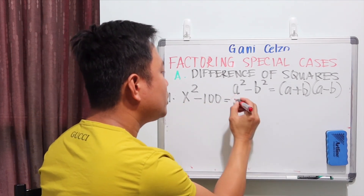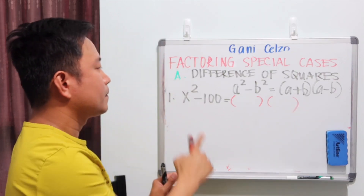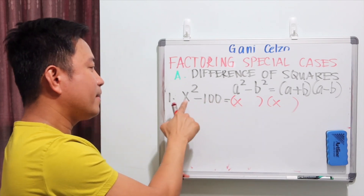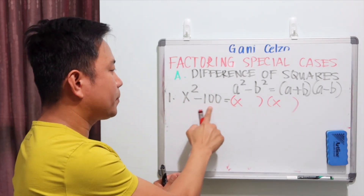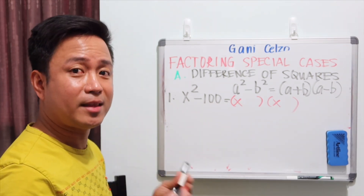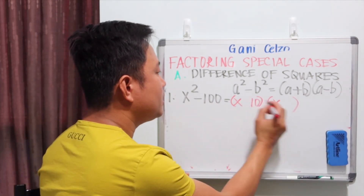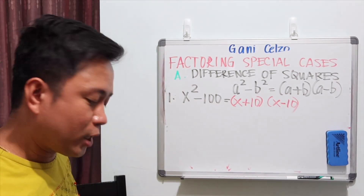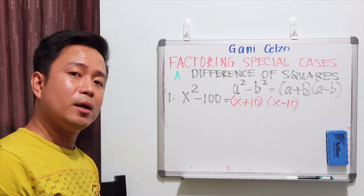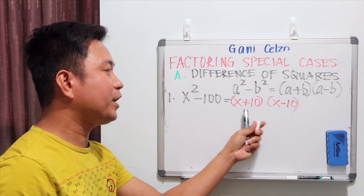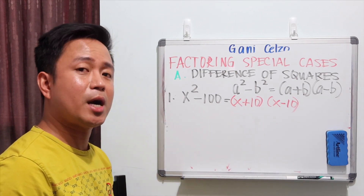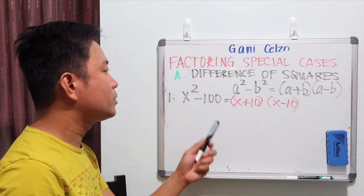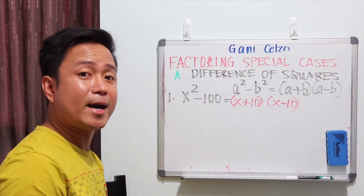When you factor x² - 100, you write x and x. x times x is x². And 100 is a perfect square: 10 times 10. So we write 10 twice — one with a plus and one with a minus: (x + 10)(x - 10). Using the distributive property you get x² - 10x + 10x - 100; the 10x terms cancel out, giving x² - 100.